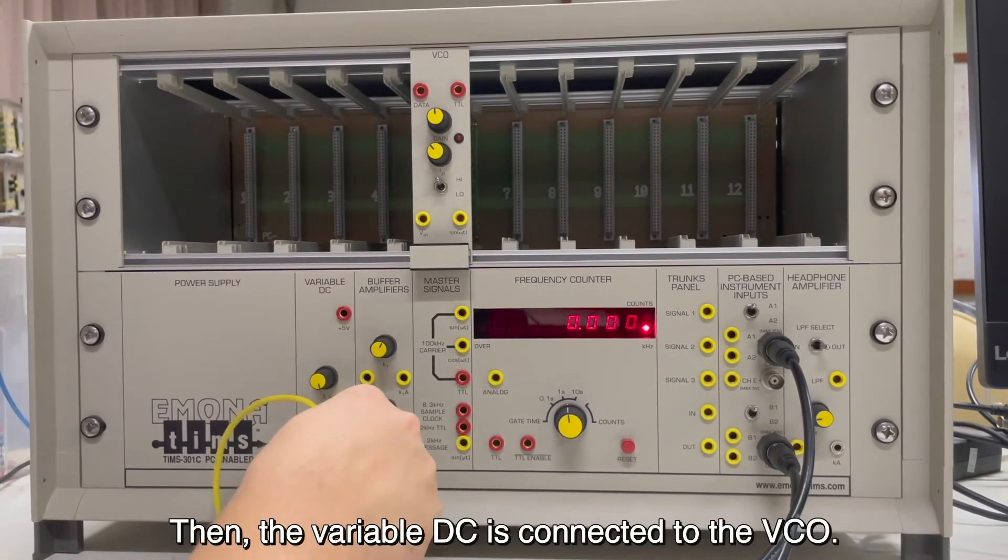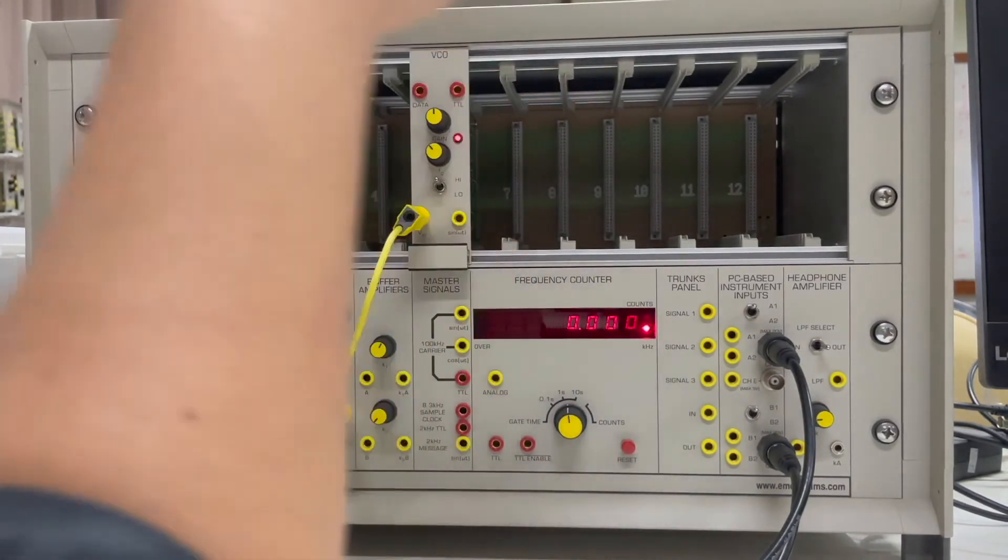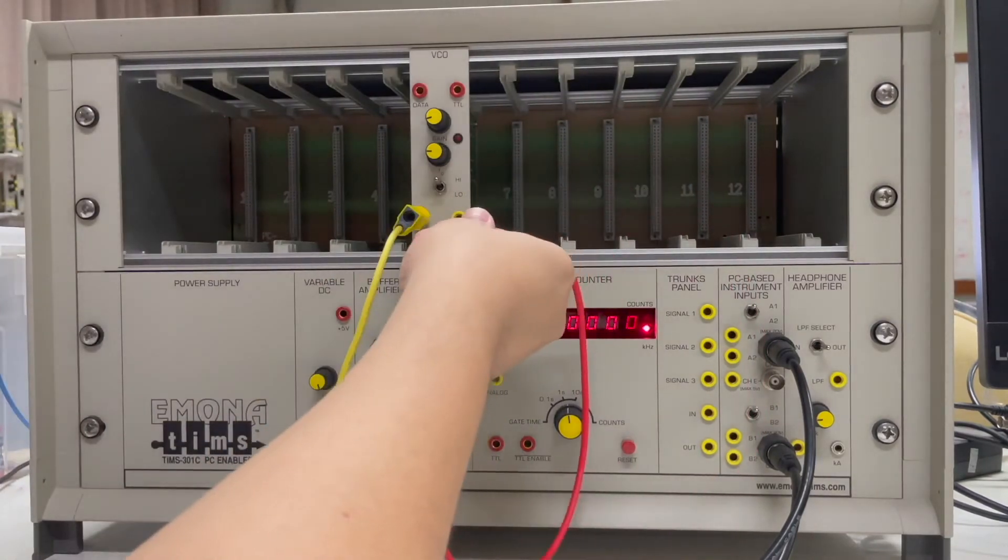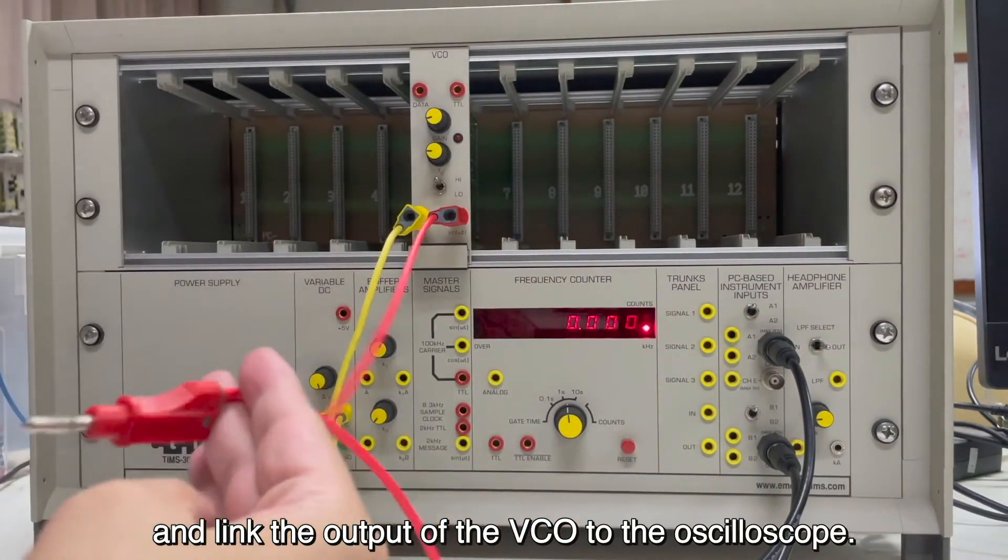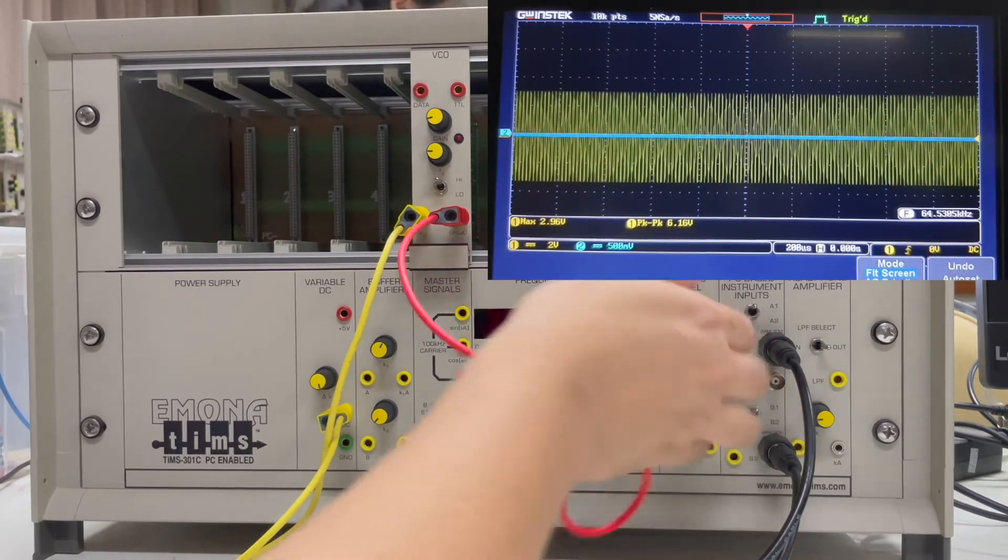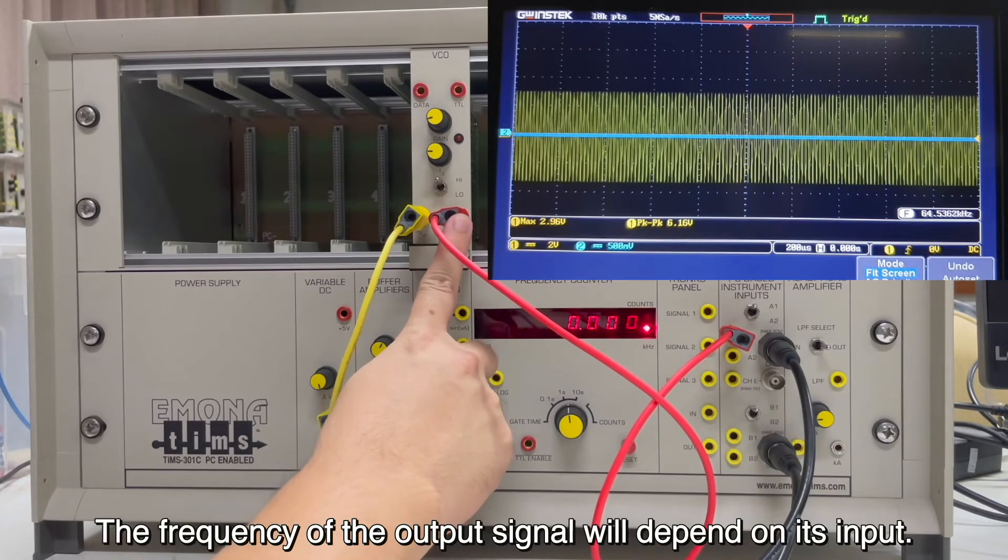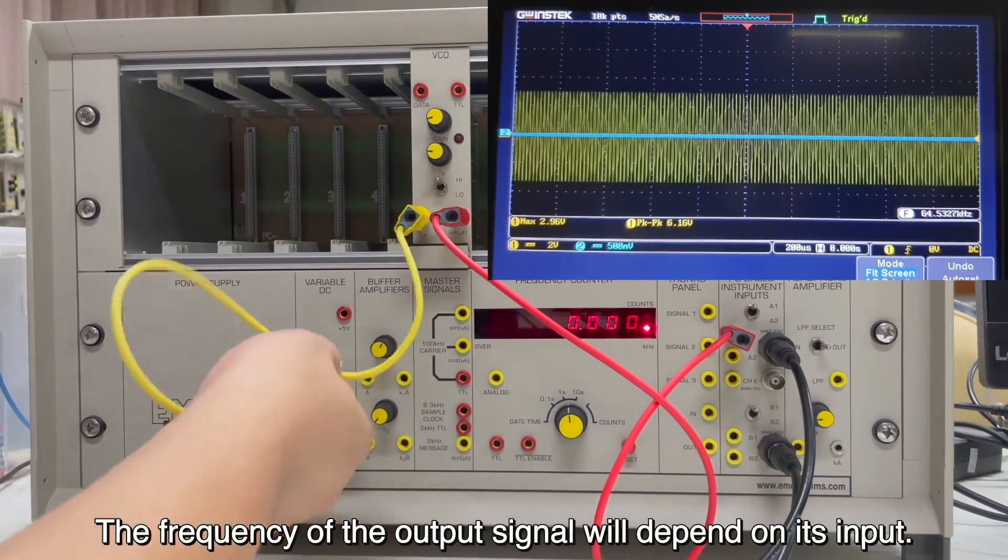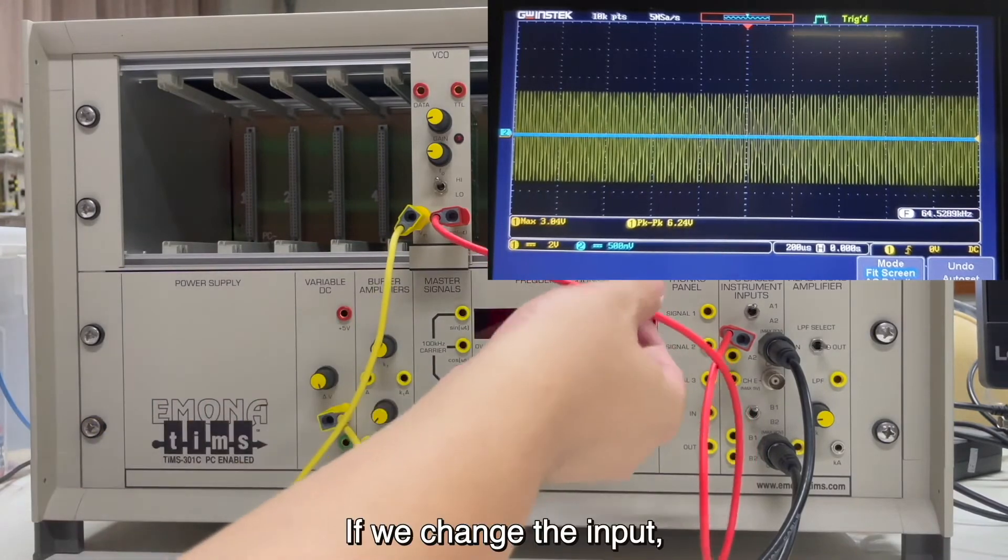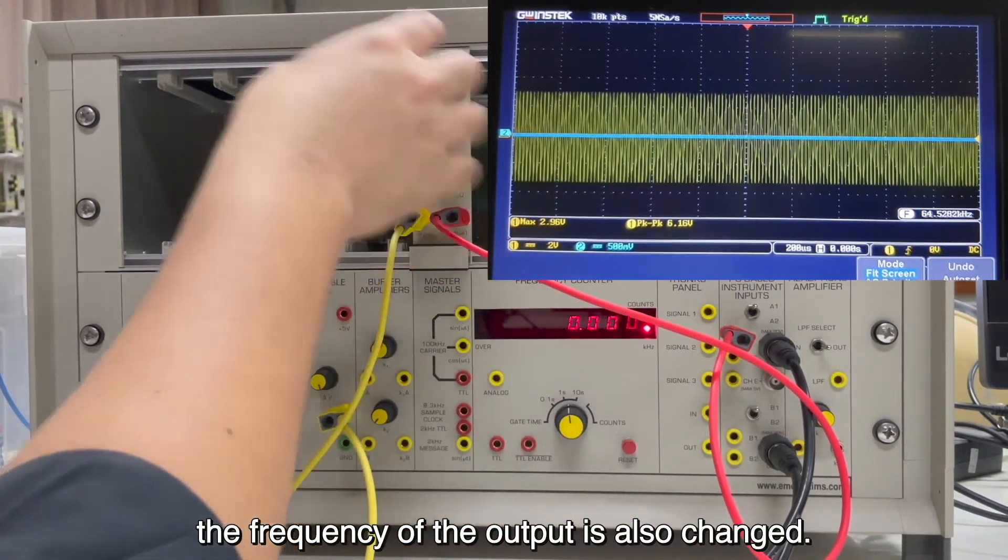Then, the variable DC is connected to the VCO. And link the output of VCO to the oscilloscope. The frequency of the output signal will depend on its input. If we change the input, the frequency of the output is also changed.